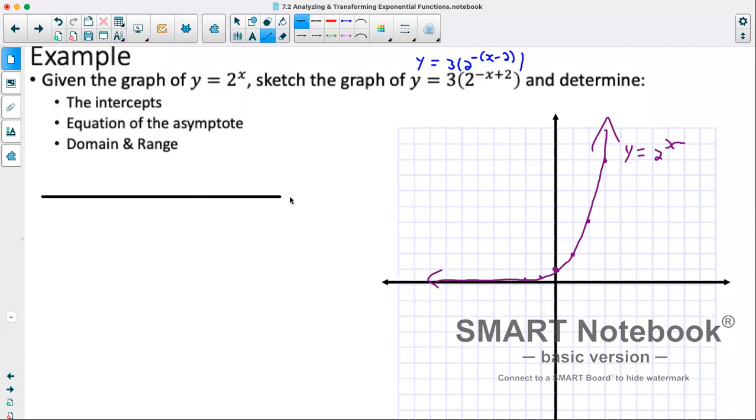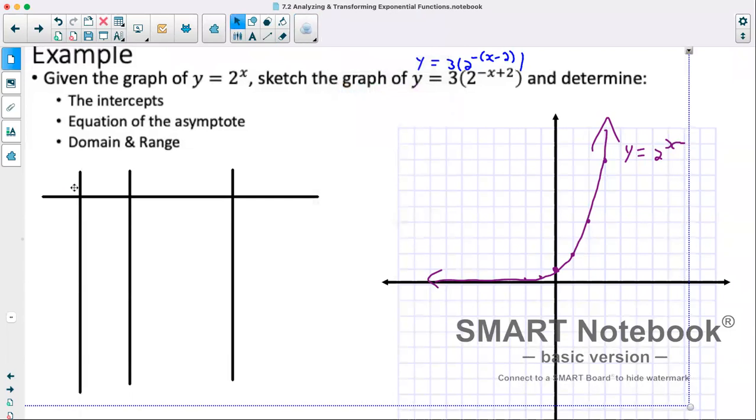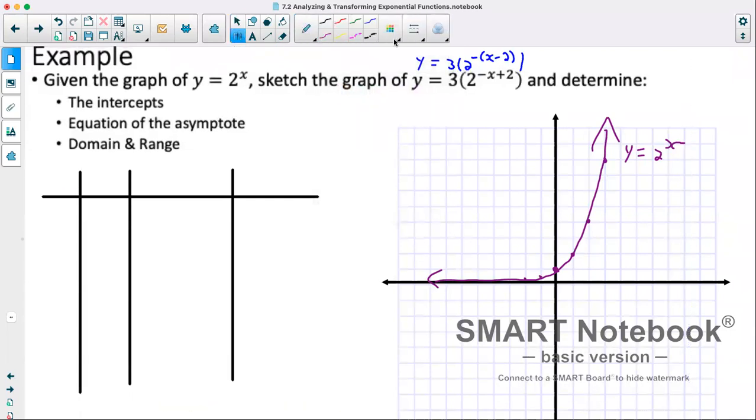So we'll start by sketching this out. So I'll do a multi-column table of values, so four different columns. I'll have the original x and y. So at negative 2, we're at one quarter. At negative 1, we were at one half. 0, we were at 1. 1, we were at 2. 2, we were at 4. And at 3, we were at 8. So now we'll apply transformations to those.